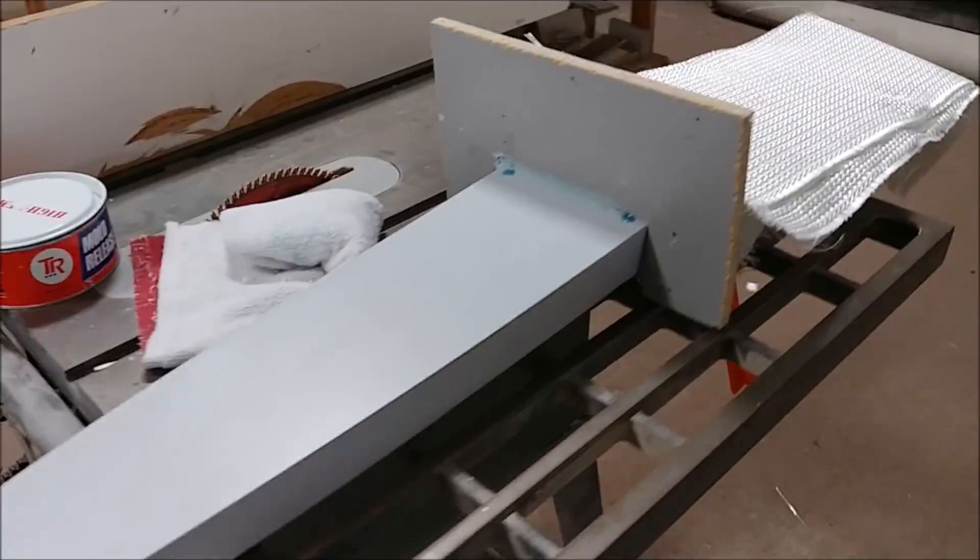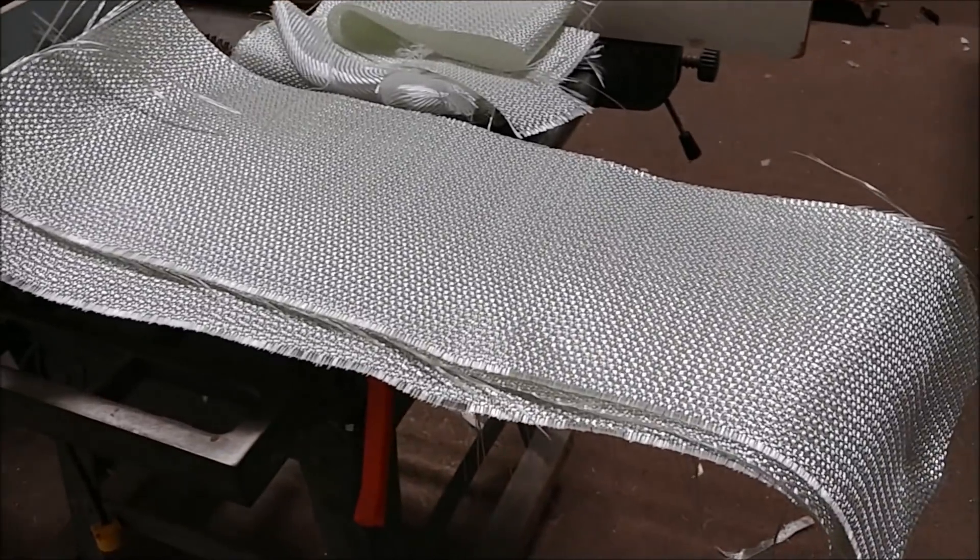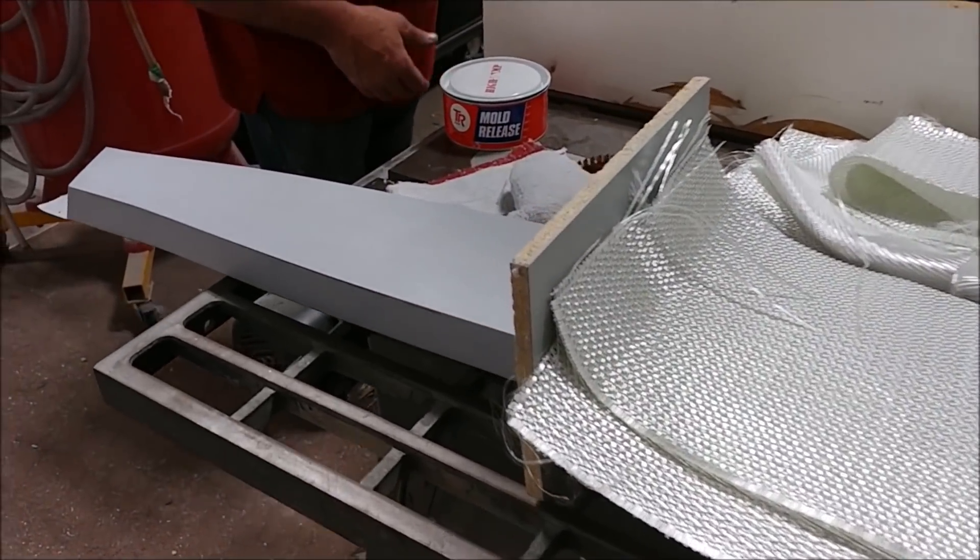This is that quick plug that Jeff made for the closeout for the forward bulkhead. He's actually having to do the mold in two pieces because of negative draft, but anyway that one's underway.